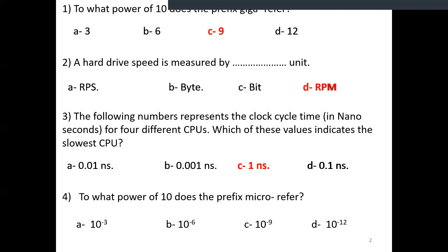What power of 10 does the prefix micro refer to? In computers we talk about space and time. Space and time use different units from capacity and speed. For capacity and speed we use kilo, mega, giga, tera, peta. For space and time we use milli, micro, nano, pico, femto. So for micro, we can find the power. The answer is B.